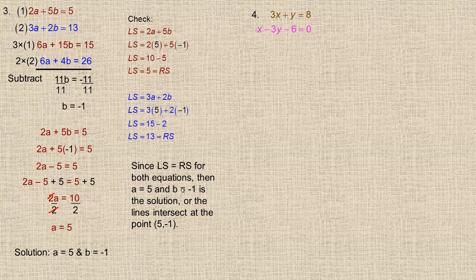Note that we have a and b here, not x and y. We'd generally assume a is on the horizontal axis and b is on the vertical, like x and y. If you knew differently, you might call the point (negative 1, 5) instead.